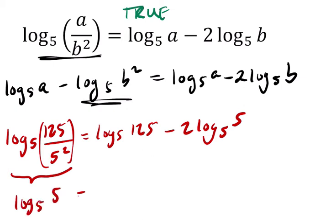And on the right-hand side, we have the log base 5 of 125. That's 3, because 5 to what power is 125? It's 5 to the third. Minus twice the log base 5 of 5, which is 1, because 5 to the first is 5.